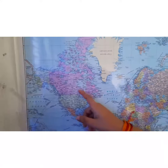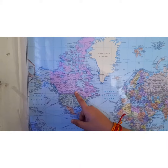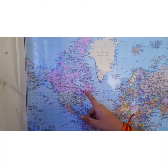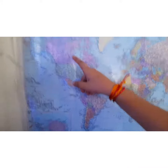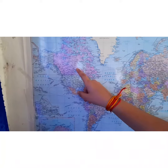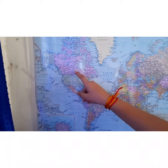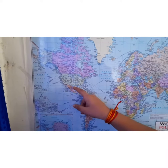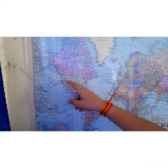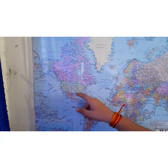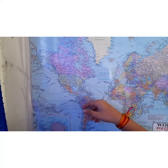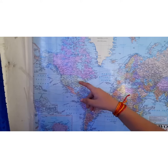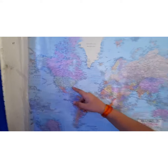Next is North America. North America is the third largest continent in the world. It is linked to South America by a very narrow strip of land called the Isthmus of Panama. The continent lies completely in the northern and western hemisphere, and three oceans surround it.